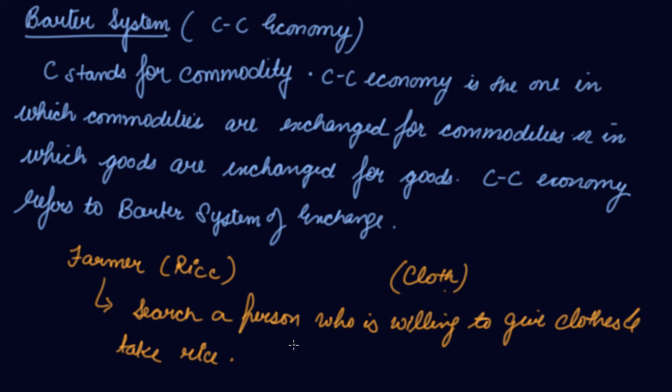This means double coincidence of wants. Your want for clothes must coincide with somebody's want for rice, and you must have surplus of rice and somebody must have surplus of clothes with them.